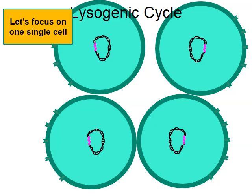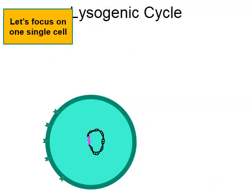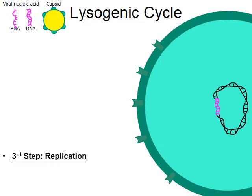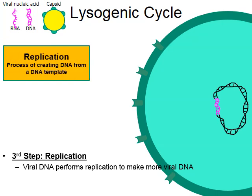Let's focus on one single cell and zoom in for a closer look. Stage three is called replication. Eventually the latent period will end, the viral DNA will become active, and this signifies step three. The DNA of the virus will perform DNA replication — the process of creating DNA from a DNA template, where a template is simply another word for a mold. Multiple molecules of DNA are replicated.